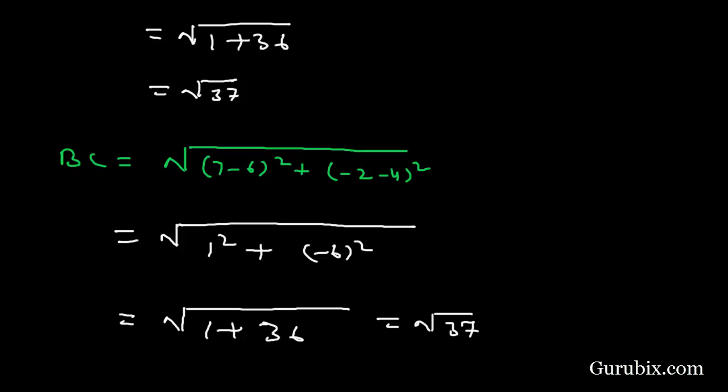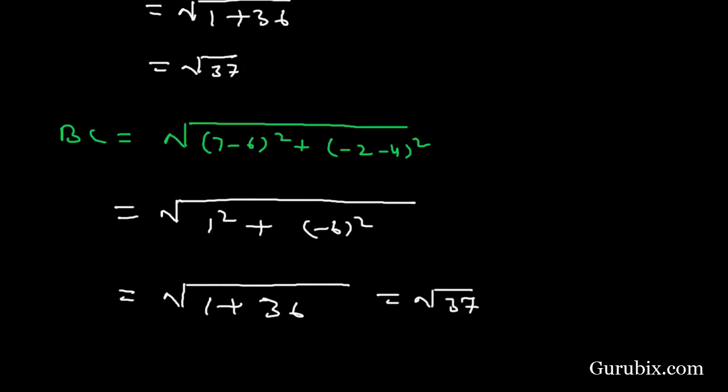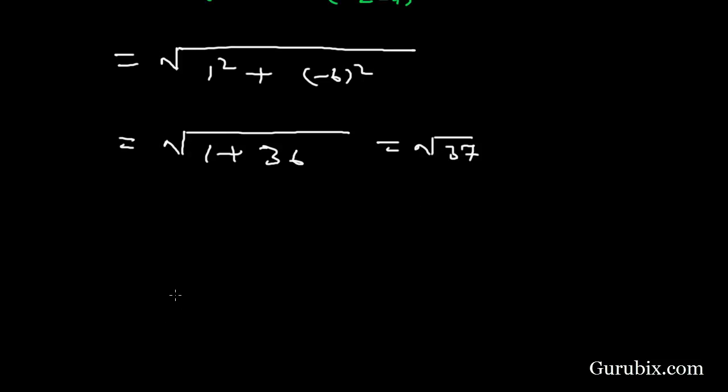Here, we need not find the distance between A and C because we have already calculated the two sides which are equal. Here, AB equals square root of 37 and BC also equals square root of 37. And we know that a triangle is called an isosceles triangle if two of its sides are equal.